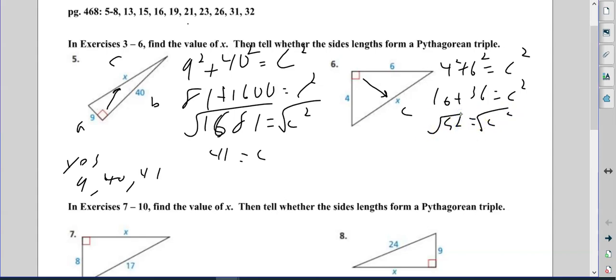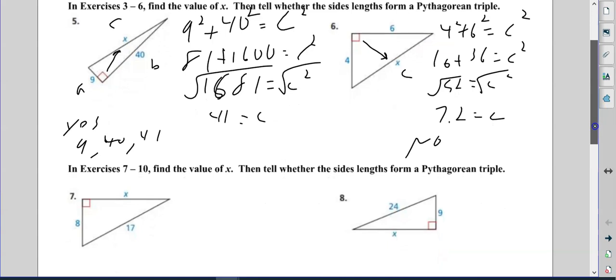We square root both sides and we get 7.2 rounded. So the answer is no, not a perfect Pythagorean triple.